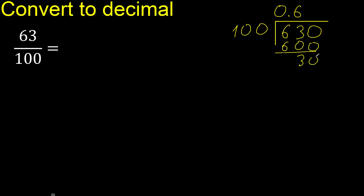Subtract 30. There is no number that goes down, therefore complete — always complete with 0. Point is here; point only once.